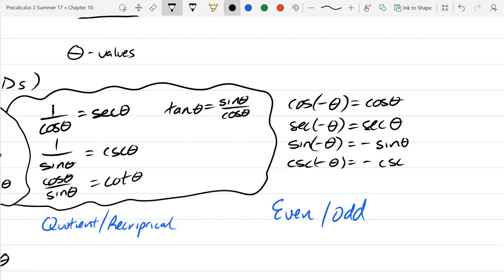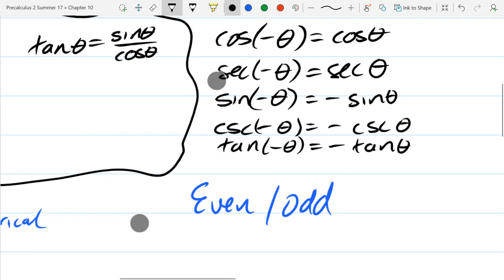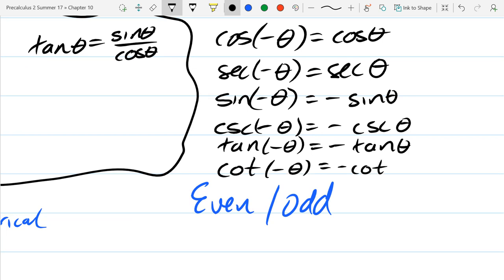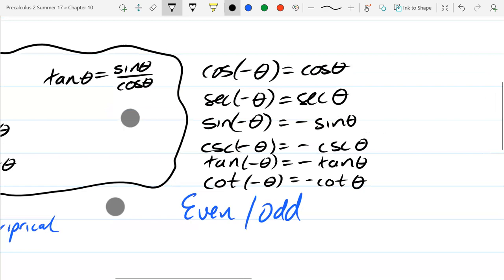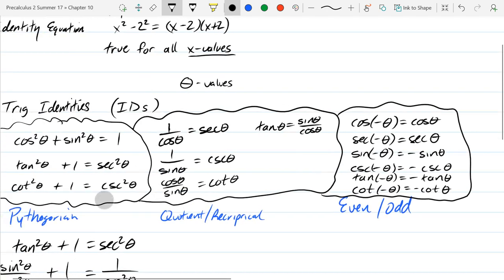Reciprocal: cosecant negative theta, negative cosecant theta. And tangent negative theta, negative tan theta. And cotangent negative theta, negative cotangent theta. Didn't use parentheses on the others. So even's the rare even function, and then all four odd functions.